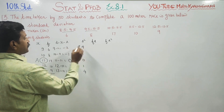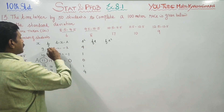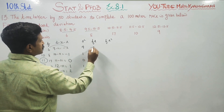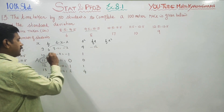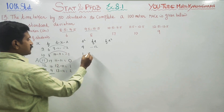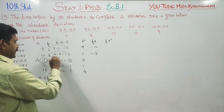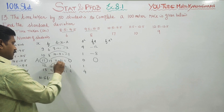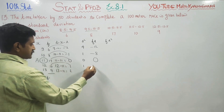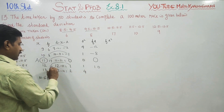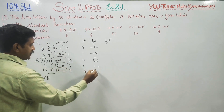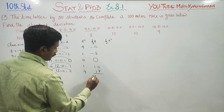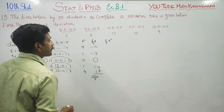First, let's find fd — that is f into d. 6 into minus 2 is minus 12. 8 into minus 1 is minus 8. 17 into 0 is 0. 10 into 1 is 10. 9 into 2 is 18. This is my sigma fd. You have to add these values.